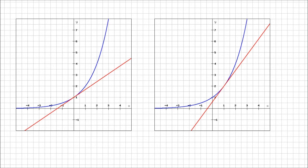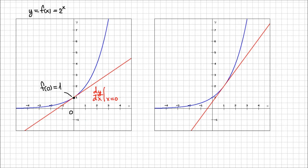What I've done here is I plotted the graph of the function 2 to the power x. I'm going to evaluate the values of the function and its derivative at two points to see what the relation is between the function and its derivative. When x is 0, we can easily calculate f of 0 to be 1 — any value to the power 0 is 1. From the graph we can tell the slope of the tangent, and I'm going to use the notation dy/dx, which is the derivative of 2^x with respect to x, when x is 0.